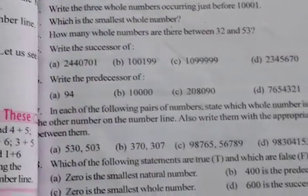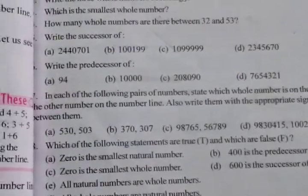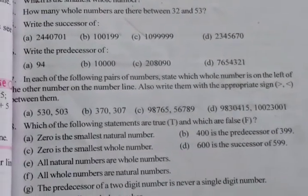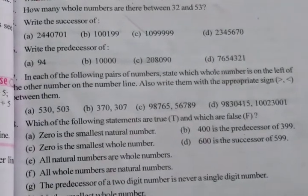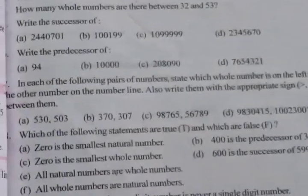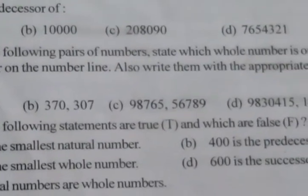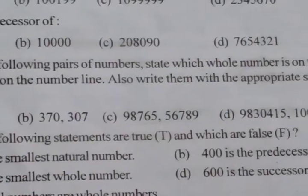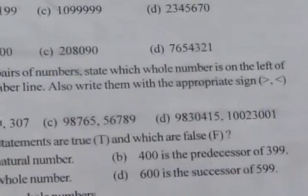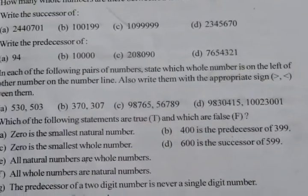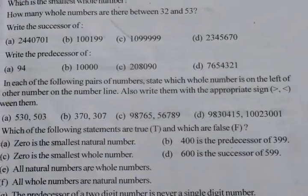Now the third pair: 98765 and 56789 — both having 5 digits. We can say 56789 is smaller than 98765, so 56789 is lying on the left side. The sign between them: 98765 is greater than 56789.